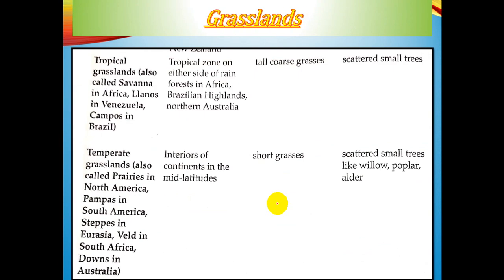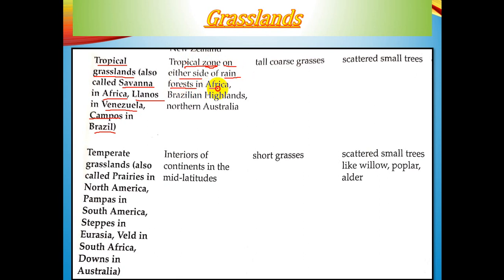Grasslands are shown here in tabular form. The tropical grassland is a type of vegetation found in Africa, Venezuela, and Brazil, with local names: savannah in Africa, llanos in Venezuela, and campos in Brazil. These tropical grasslands are situated on either side of the rainforest — in Africa, the Brazilian highlands, and northern Australia.